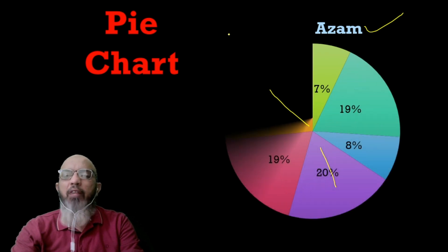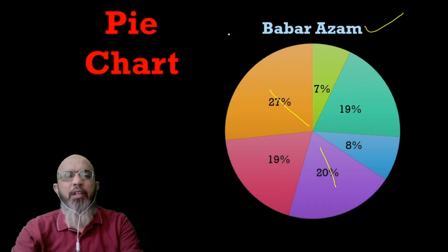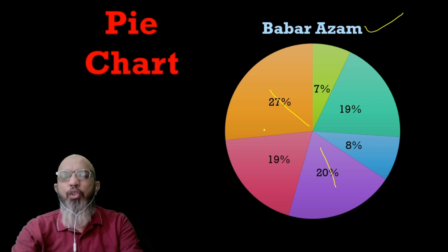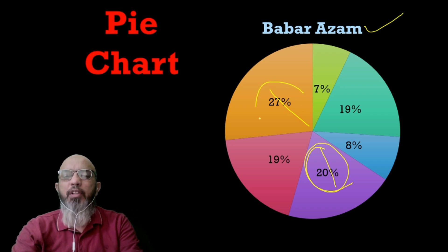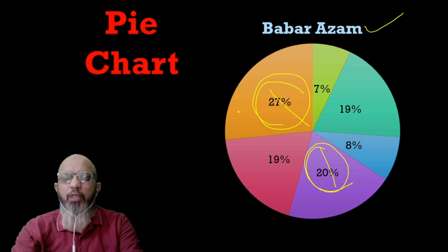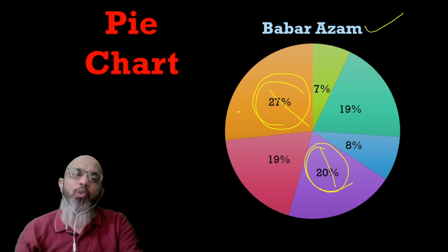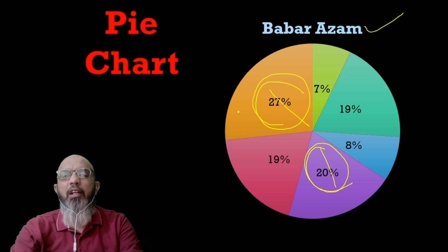Now let's come to our main topic — pie chart. You are very much familiar with Babar Azam, a star player of Pakistan. He scored hundreds in his innings, and here is a chart showing where he scored his runs on the ground — his strong areas. One area shows twenty percent and another twenty-seven percent. In this way it is very easy for us to understand data represented through charts.